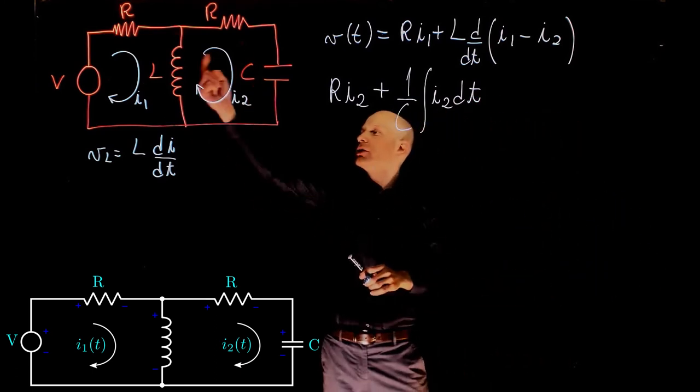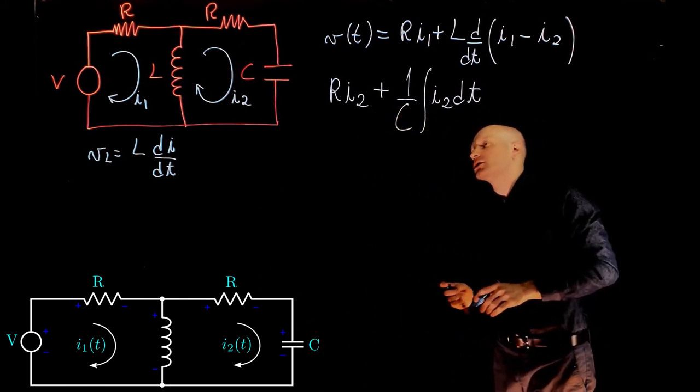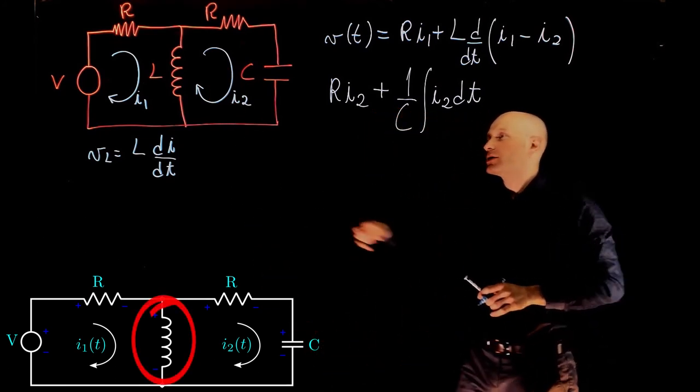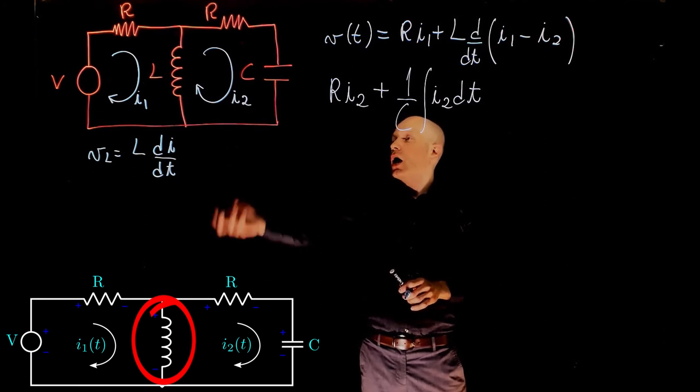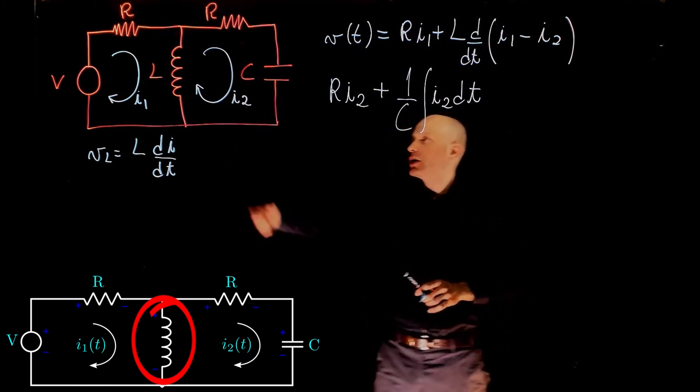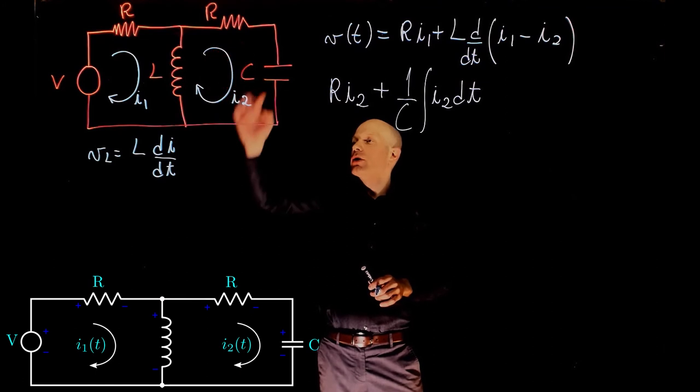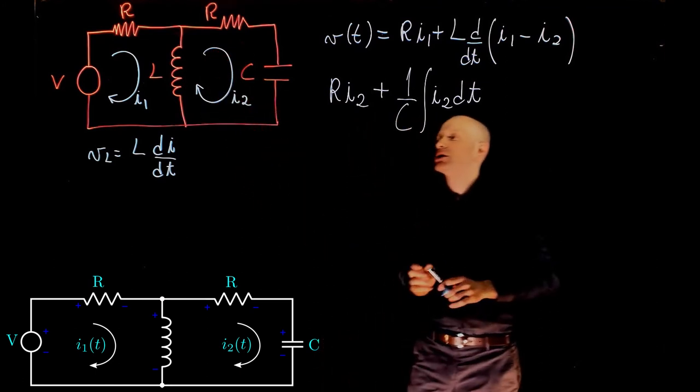And the last element that we have in the circuit is the same inductor. But note that now our reference is I2. Our sense of positive currents is clockwise. That's what we are following now, so I2 is now positive.